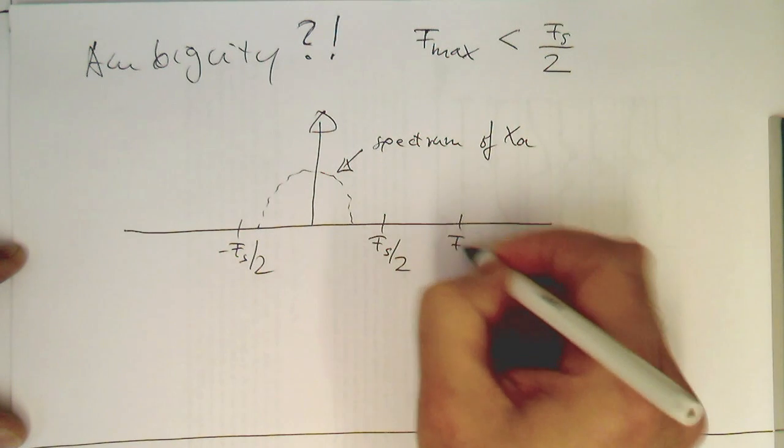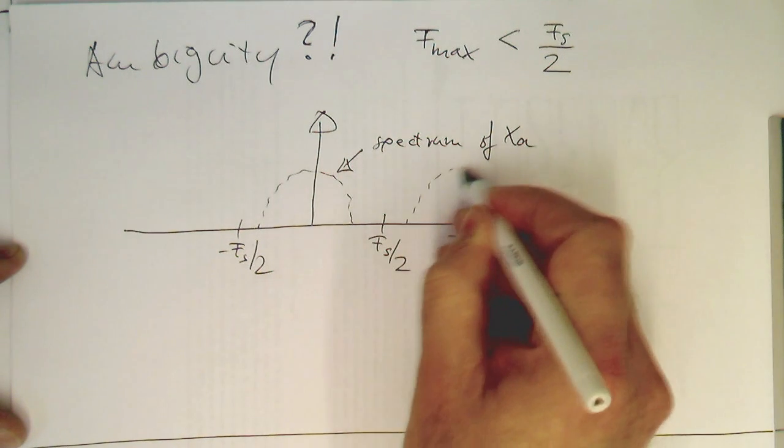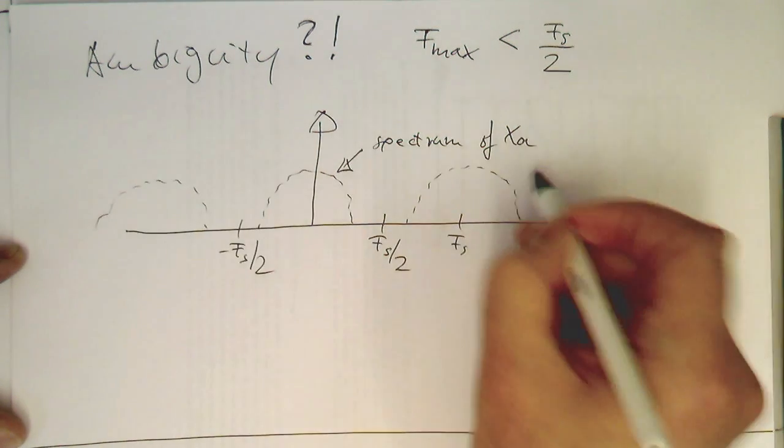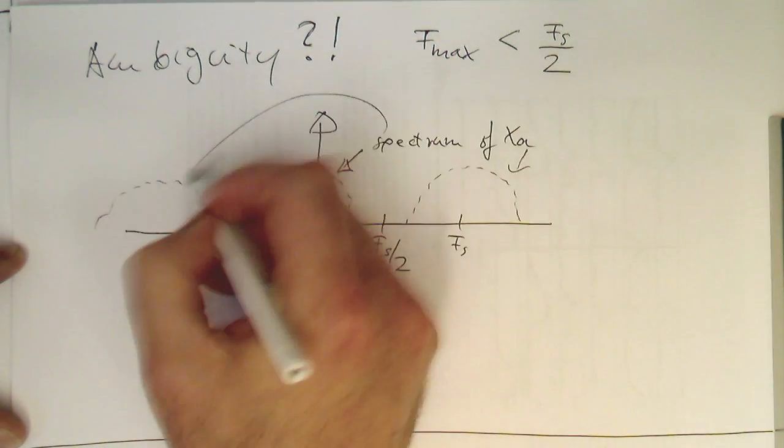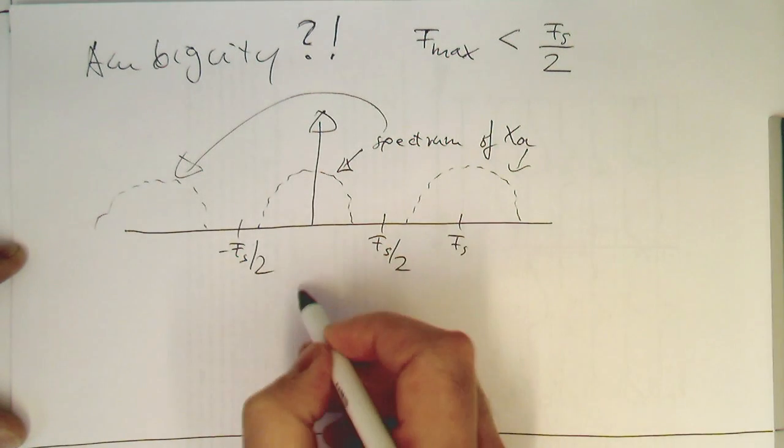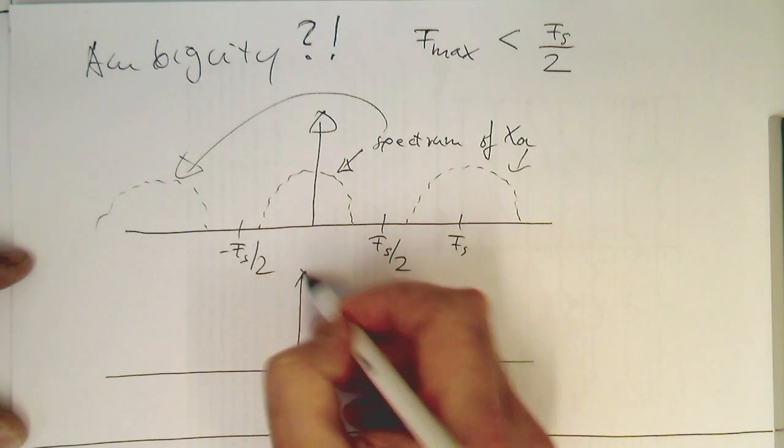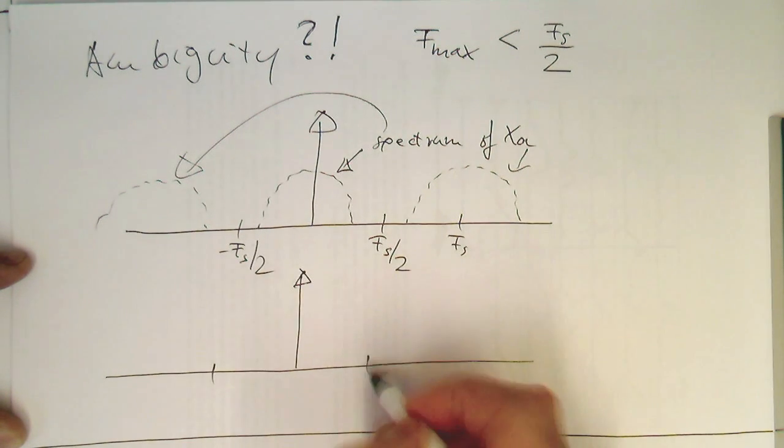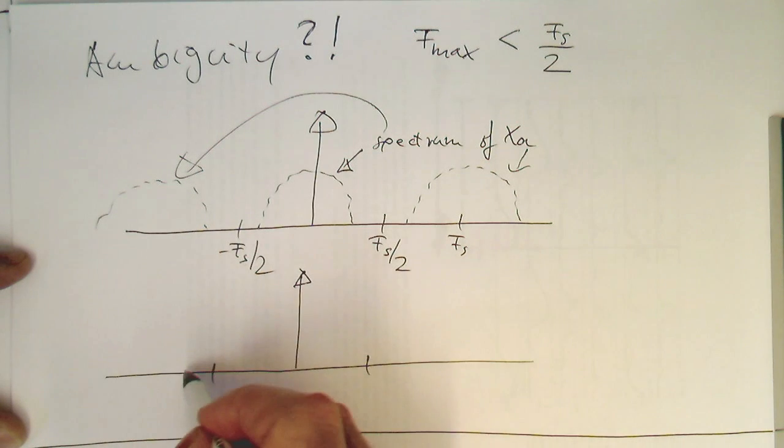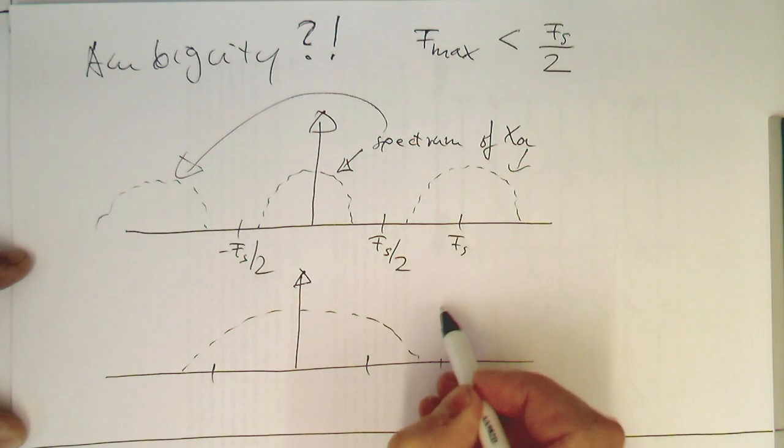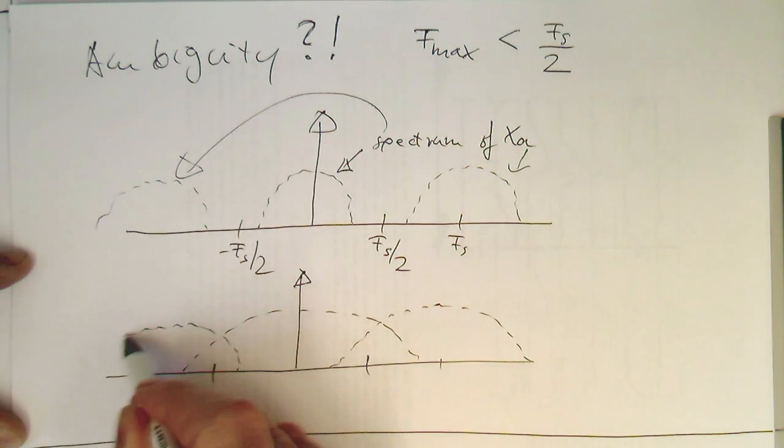And then we now add Fs, it shows up again, and again on the other side here. So we've got the spectrum also here. Now imagine, what is happening if the spectrum is now wider? We've got the same here, but the spectrum goes like this. Then obviously, the copy of the spectrum here will reach into this region and create an overlap.